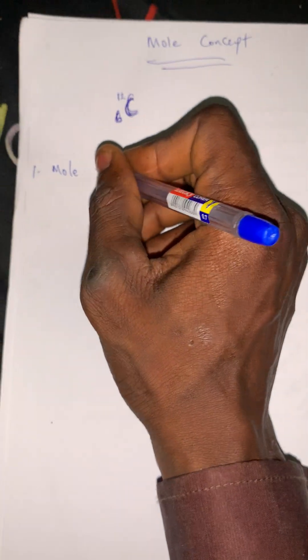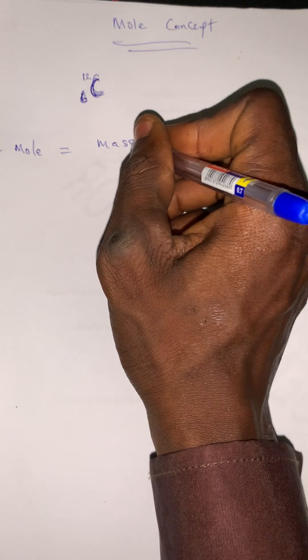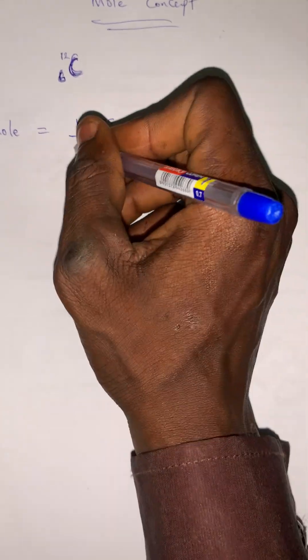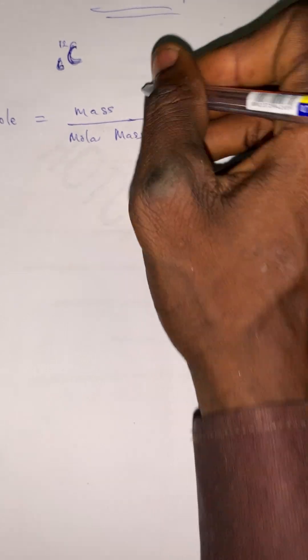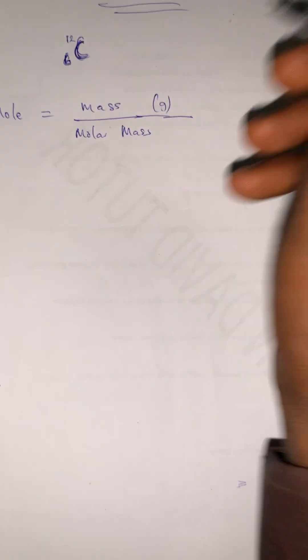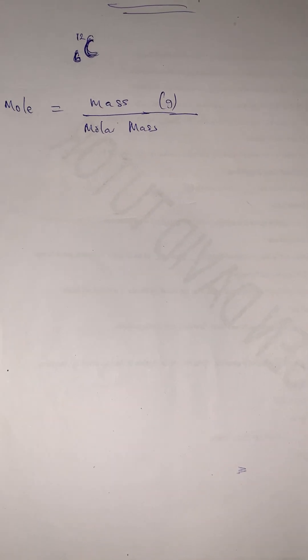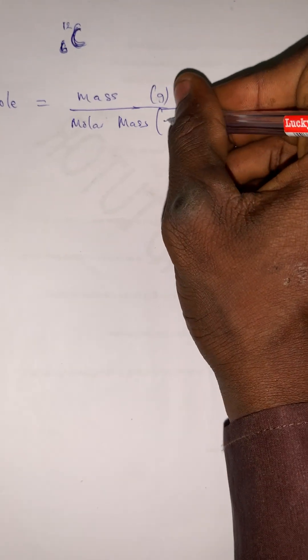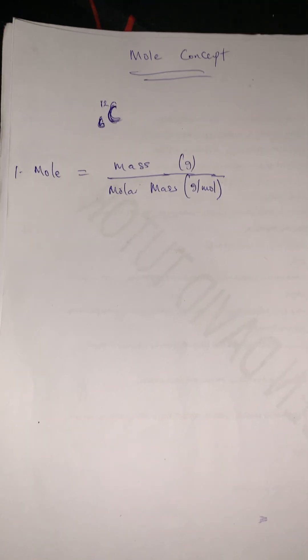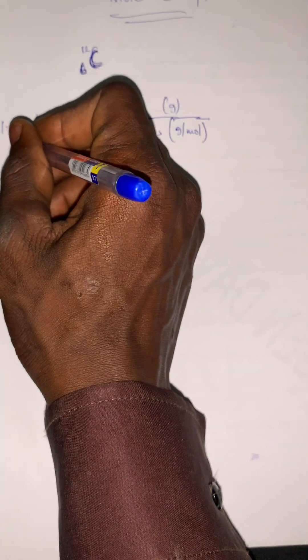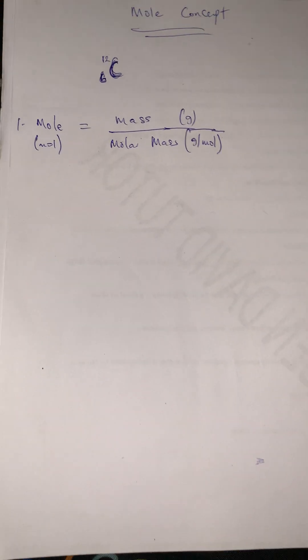Number one: mole equals mass given over molar mass. Don't forget that mass is measured in grams and molar mass is grams per mole. The unit of mole is a mole.